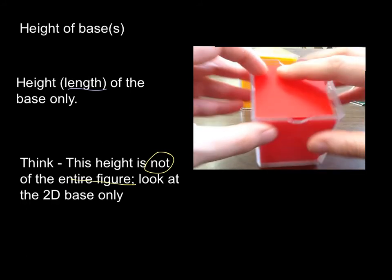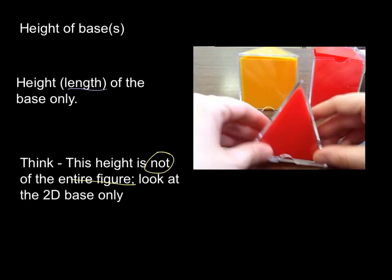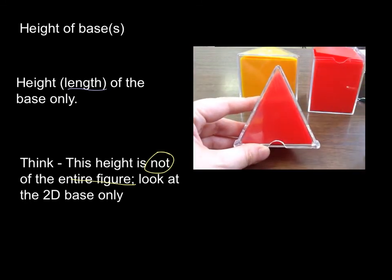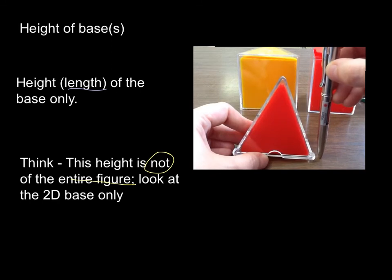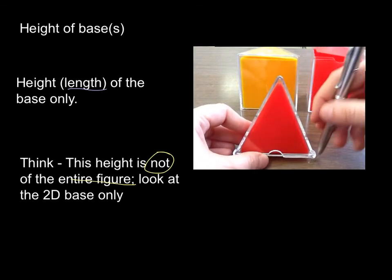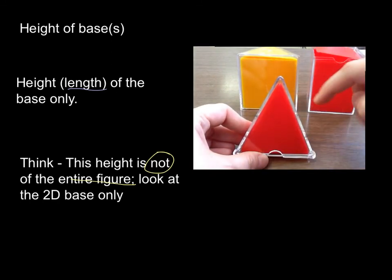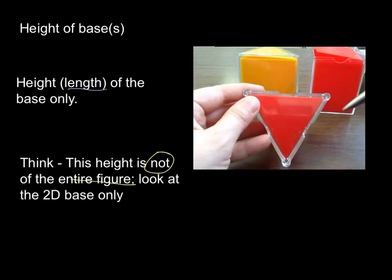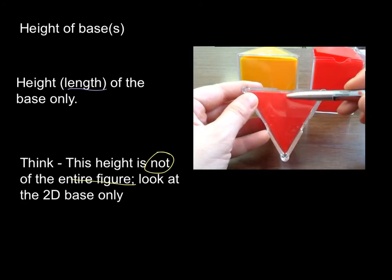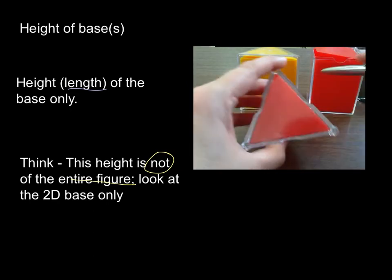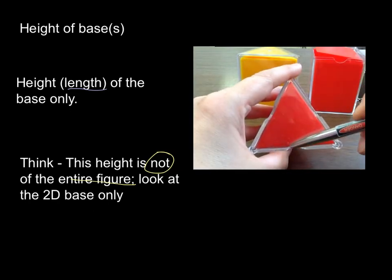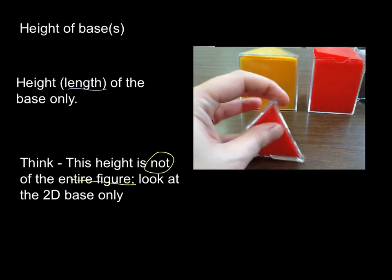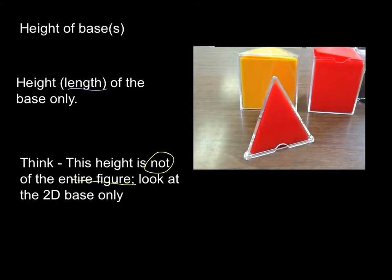The 2D base only. And on our triangular pyramid, the height of the entire pyramid is this whole entire height — how tall it is from here to the vertex. But if we're talking about the height of the base, it's this height right here. So we're only focused on the 2D base when we're talking about height of base.